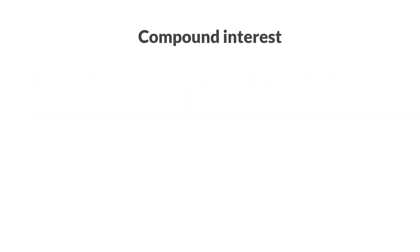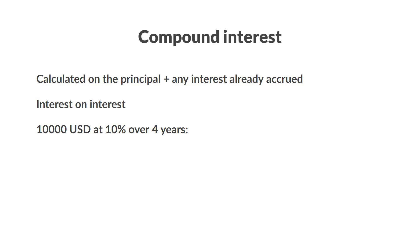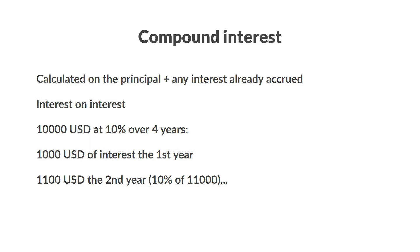Compound interest is a bit more complicated than simple interest. It's calculated on the principal balance, plus any outstanding interest that has already occurred. In other words, it's interest on interest. For example, the same $10,000 from before, at the same 10% over 4 years, using compound interest will cost you $1,000 the first year, but the next year it will cost you $1,100. Which is 10% of $11,000, or $10,000 principal plus the $1,000 in interest already paid. And each year it will keep growing, so you'll end up owing a total of $14,641 versus $14,000 using simple interest.